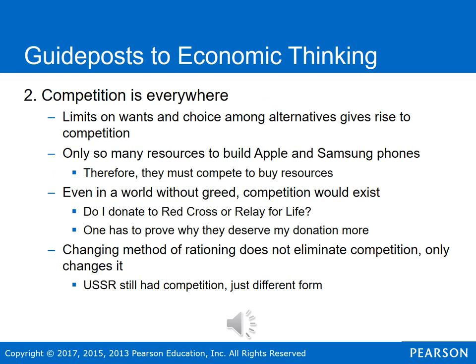The next guidepost to economic thinking is that competition is everywhere. Because there are limits on wants and we're forced to choose between alternatives, this gives rise to competition. There are only so many resources that can be used to build, for instance, phones between Apple and Samsung. Therefore, those two firms must compete to buy resources — in this case, competing on the price they're willing to pay to whoever provides the raw materials.